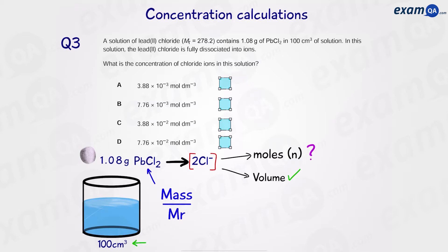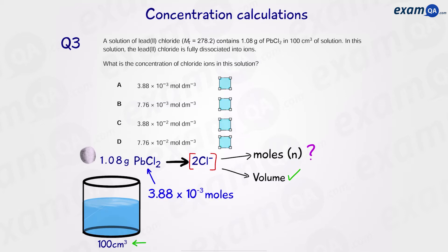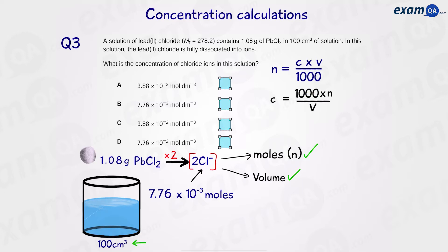We use the equation: moles equals mass over MR. The mass is 1.08 and using the periodic table we get an MR of 278.2, giving us the moles of lead chloride. Since it's a 1-to-2 ratio, we times by 2 to get 7.76 × 10⁻³ moles of chloride ions. We then use moles equals concentration times volume over 1000, rearranging to get concentration equals moles times 1000 over volume. Plugging in the values gives a concentration of 7.76 × 10⁻² mol dm⁻³, so the answer is D.